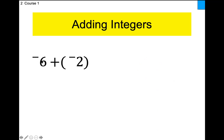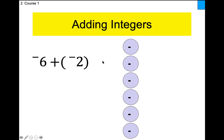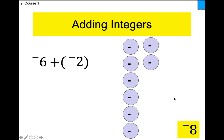One more time: negative six plus negative two. Negative six means six negative coins. I'm adding two more negative coins. Nothing cancels because they're all negative, so I simply count: one, two, three, four, five, six, seven, eight. I have eight negative coins. So negative six plus negative two is negative eight. Notice I haven't talked about the rules yet — we're just doing the coin method first.